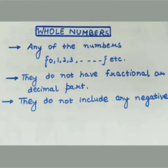Point 2: whole numbers do not have any fraction or decimal part. They do not include any fractional or decimal part, and they do not include any negative value. Whole numbers are always the positive ones.